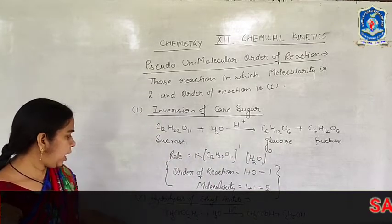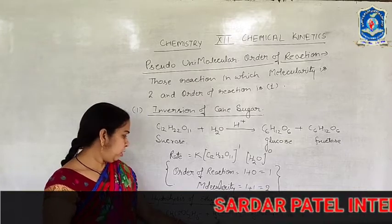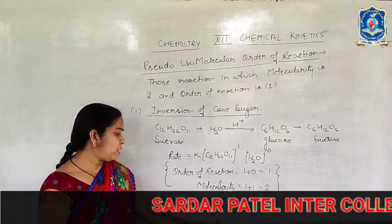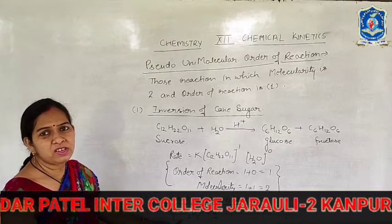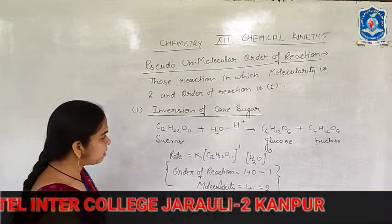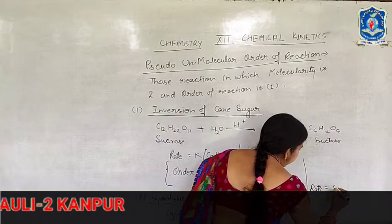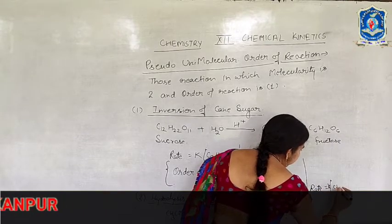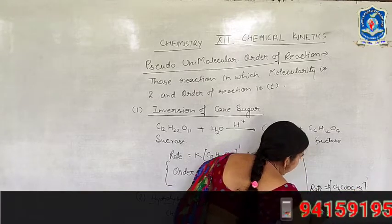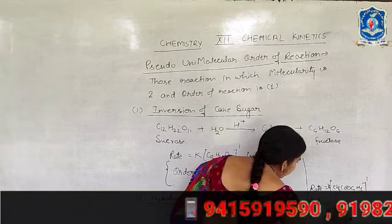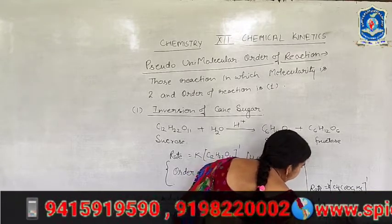In this reaction again, we obtain water in a large amount. Therefore, water cannot affect the rate of reaction. The rate of reaction is only affected by the concentration of the ester molecule. Hence, rate becomes K[CH3COOC2H5]. Hence, the order is 1 and molecularity is 2.